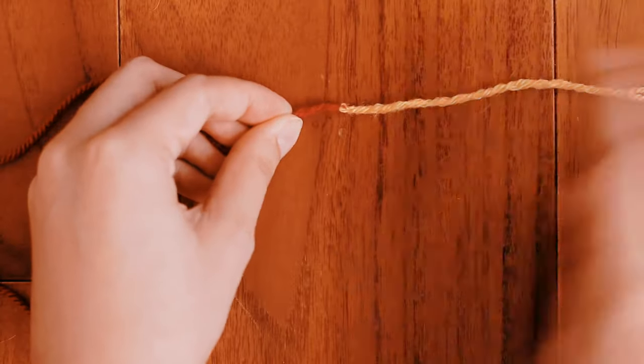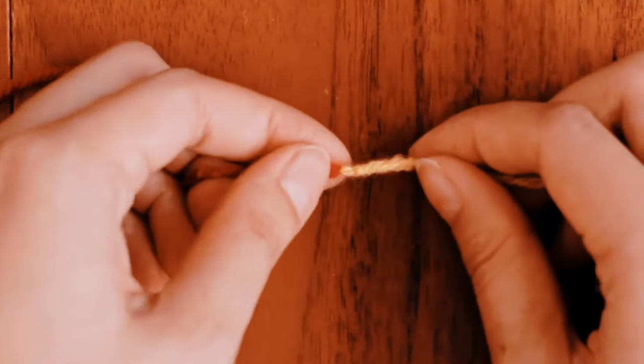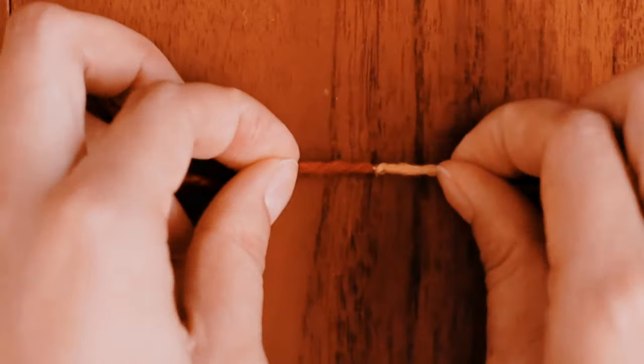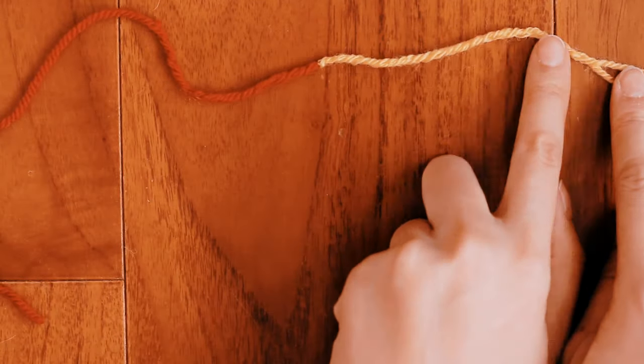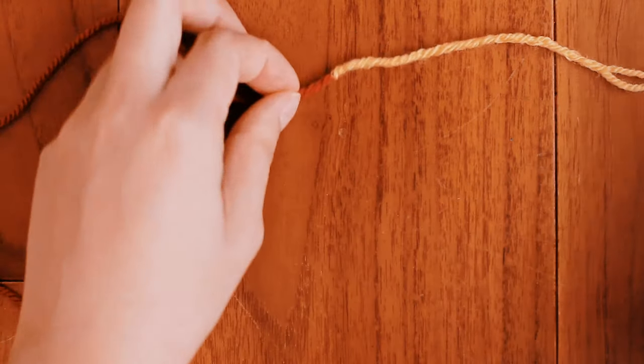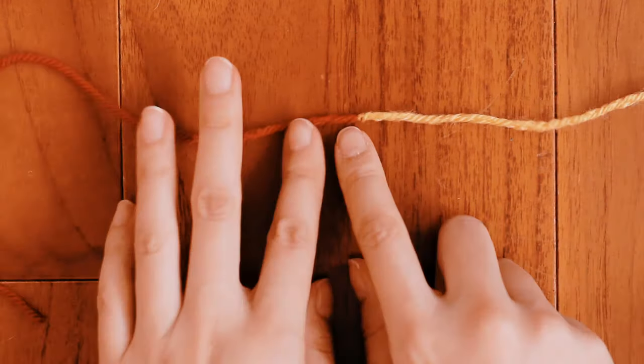And ta-da! Look what magically happens. Now our join is super tight, very invisible, because we've basically moved the bunching all the way back up here. So that's a really easy way to troubleshoot your Russian join.